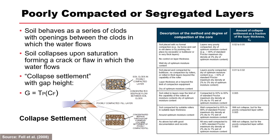Cracking, hydraulic fracture, or openings can occur in poorly compacted cohesive soils — often compacted at more than 2% dry of optimum — particularly for dispersive soils. The mechanism is potentially of two types: the soil behaves as a series of clods with openings between them through which water passes, or the soil collapses on saturation forming a flaw or open pathway. Fell et al. 2008 provides suggested guidance for estimating the amount of collapse settlement as a fraction of layer thickness, used in the collapse settlement worksheet in the RMC concentrated leak erosion toolbox.